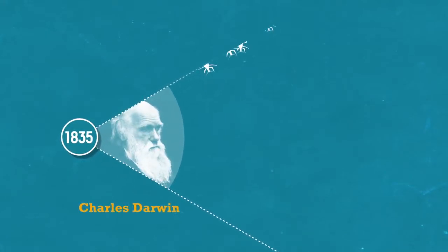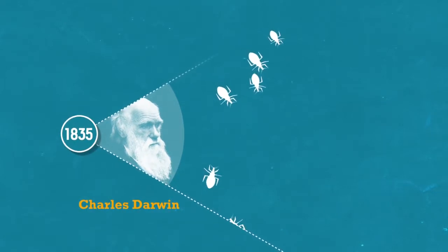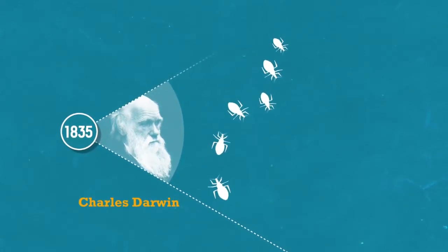In 1835, British naturalist Charles Darwin described how people were bitten by the vinchuca, a South American insect.